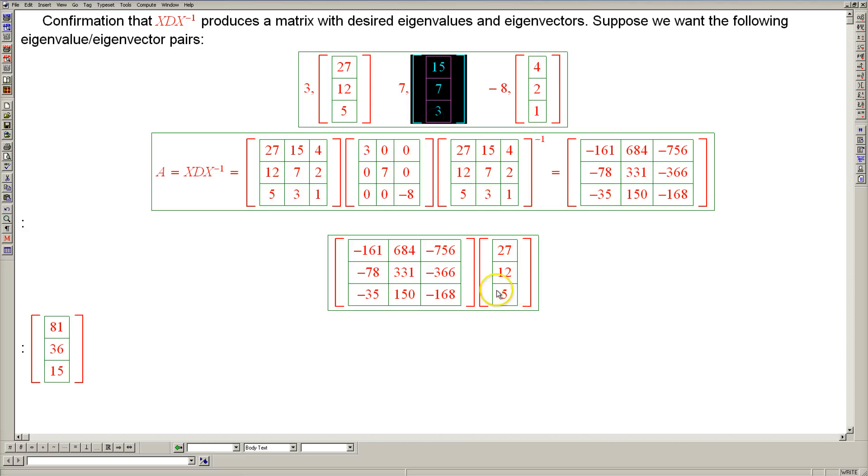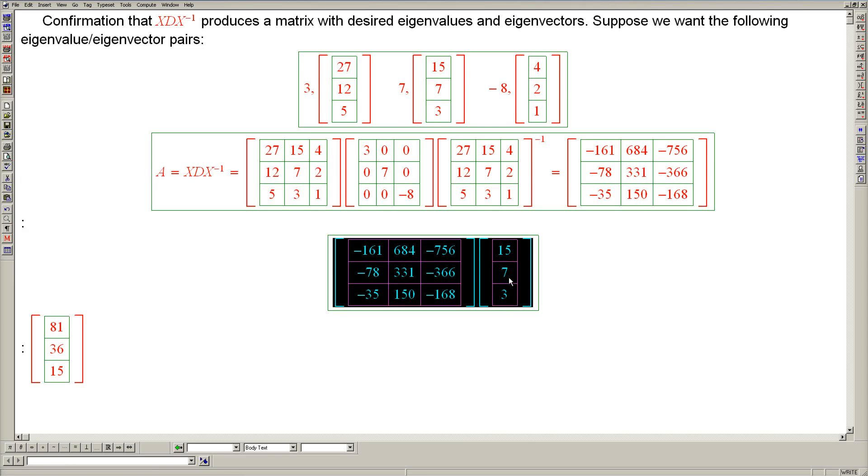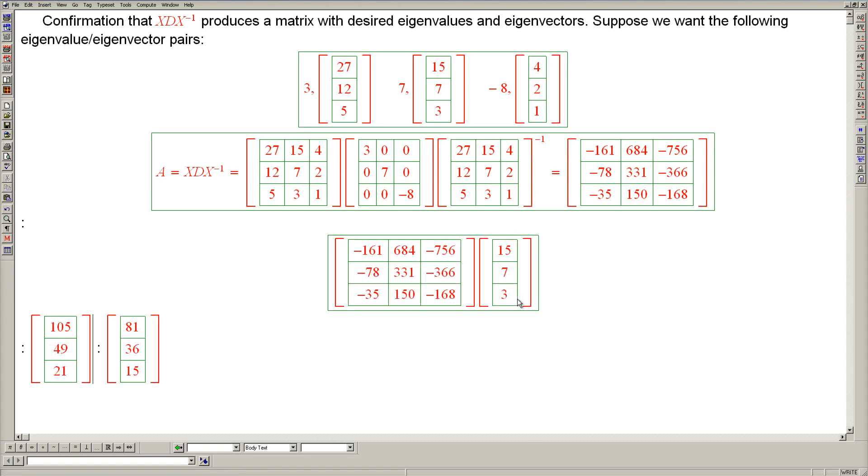Now for the next one, the output should be seven times the input vector, so the first number will be 105, then 49, 21. Exactly.